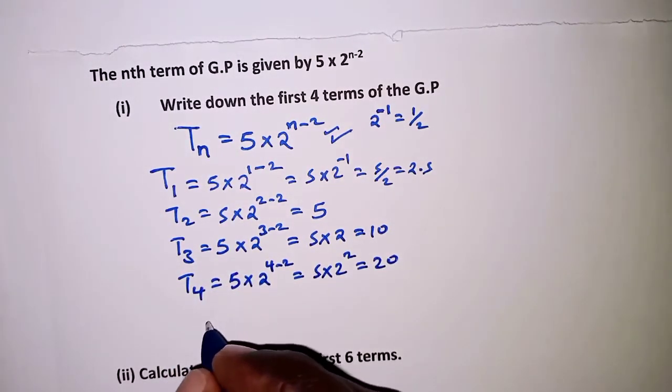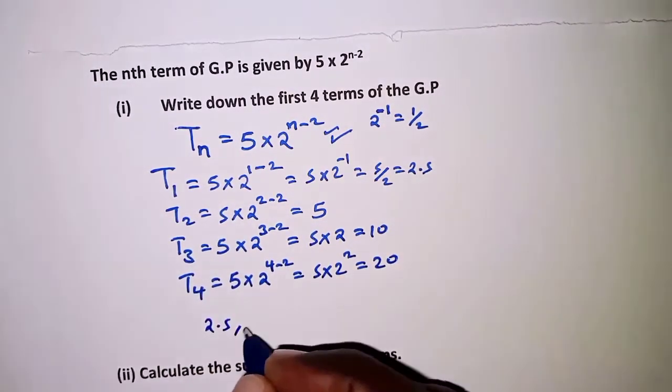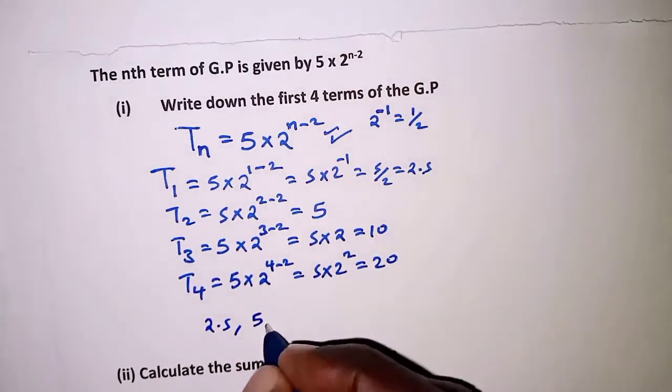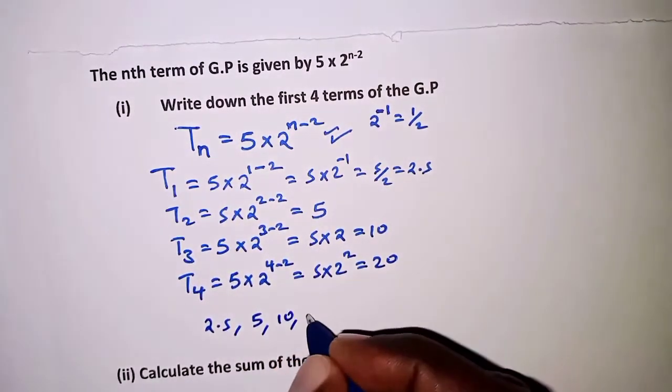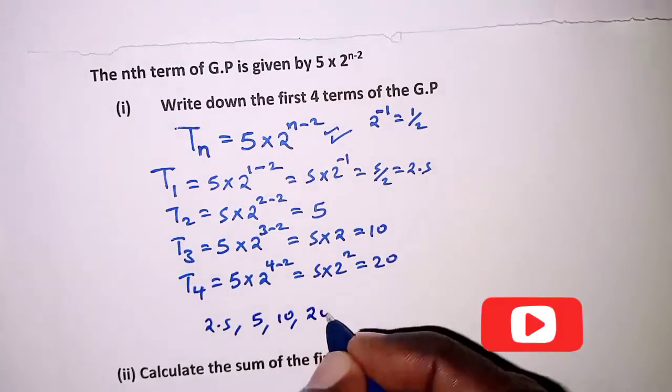So listing down the terms, we'll have the first term as 2.5, the next term is 5, the next term is 10, and the fourth is 20.